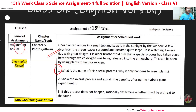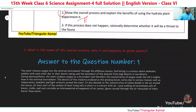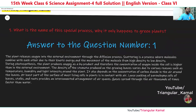Question number one: what is the name of this special process mentioned here, and why does it only happen in green plants? Number two: show the overall process and explain the benefits of using the hydrilla plant in the experiment. You have to show the experiment and write all steps up to the last. And if the process doesn't happen rationally, determine whether it will be a threat to all living things.